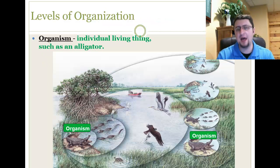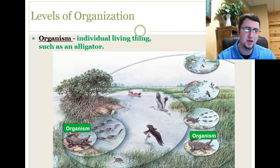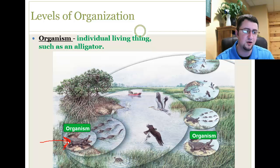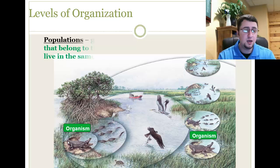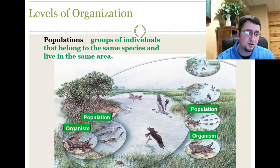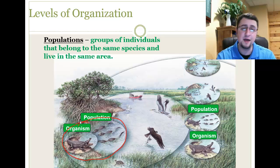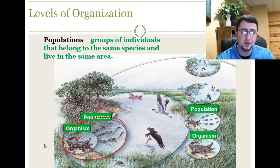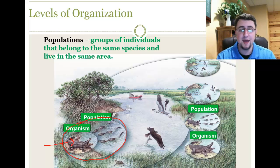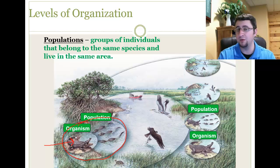Ecologists organize life into different levels. We start with the level of an individual organism — for example, this alligator right here is one single organism. Next, if we have a population of alligators, that is all alligators from the same species living together in the same area. An individual is the lowest level of ecological organization, and a population is the next level. Populations are also the smallest unit capable of evolving.